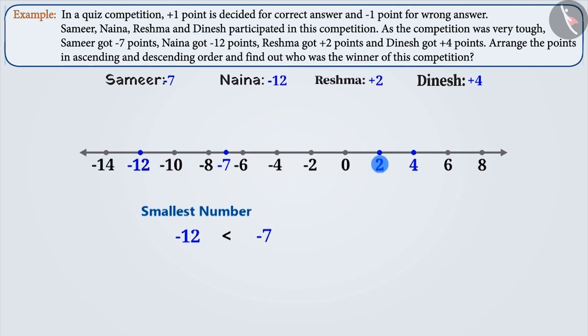Then, the next number is plus 2, which is to the right of minus 12 and minus 7, and hence it is larger than these two. But plus 2 is to the left of plus 4, and hence is smaller than plus 4. That is, the number plus 2 will be written after the number minus 7. Since plus 4 is to the right of all of them, it is the larger of the lot. So, after plus 2, we will write plus 4.